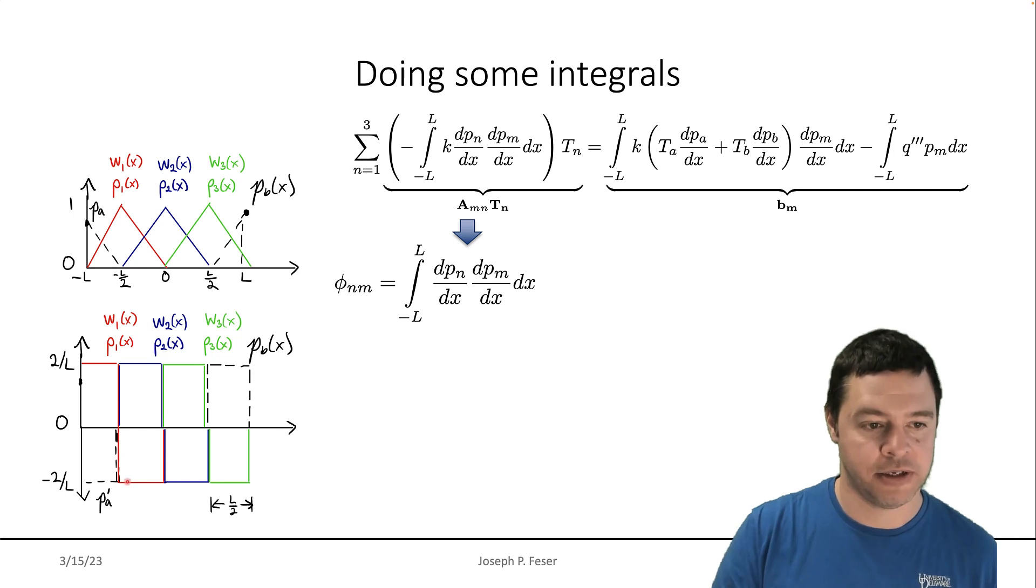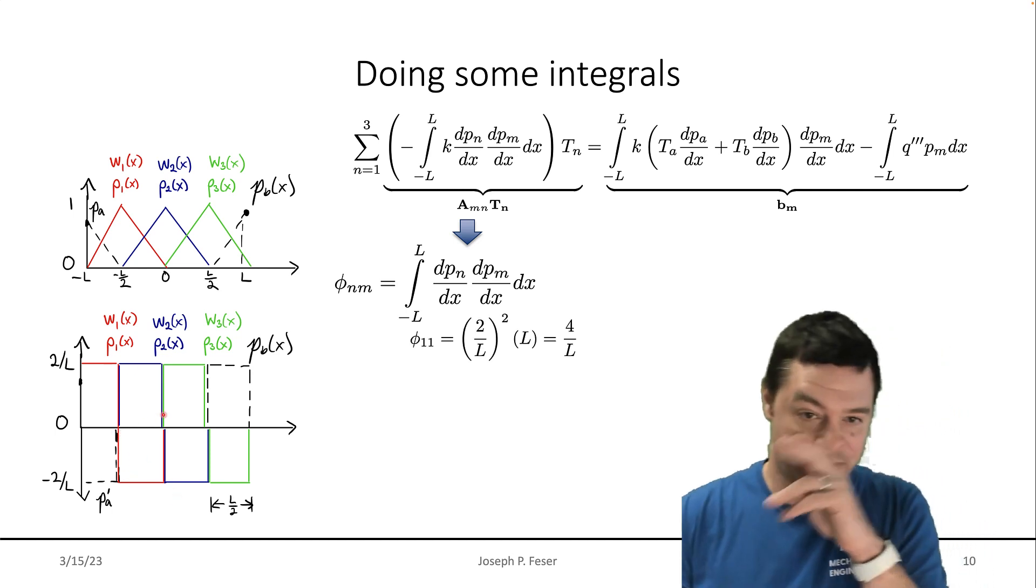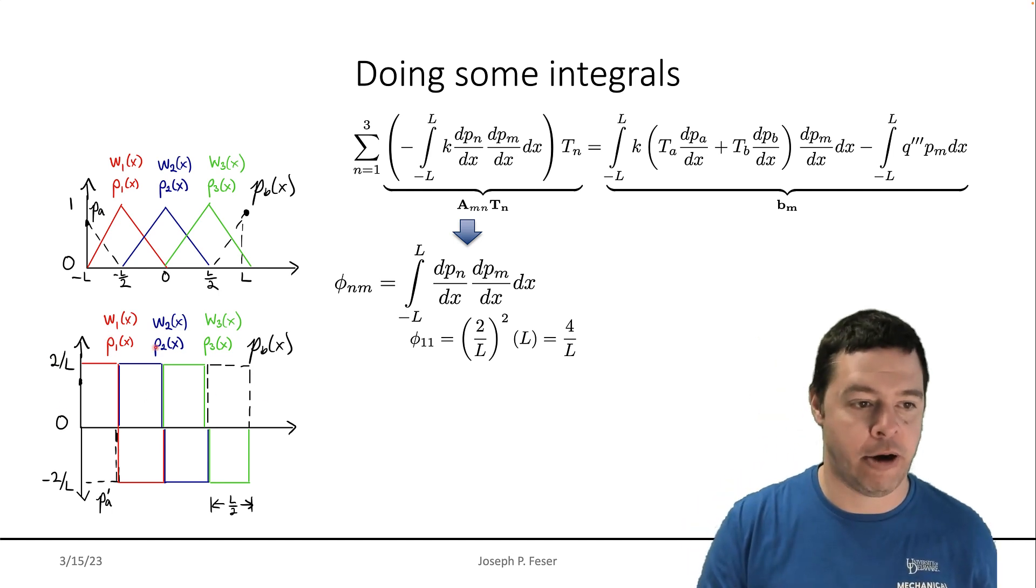There's only a region of size, whatever that is, L over two, where they actually overlap unless M is equal to N, in which case they are the same function and then they overlap for the whole length of it. So you kind of have to go through this logic. So if the two overlaps, if I'm talking about how P1 overlaps with P1, then you basically just take the square of the value, multiply by the length of the integration region.